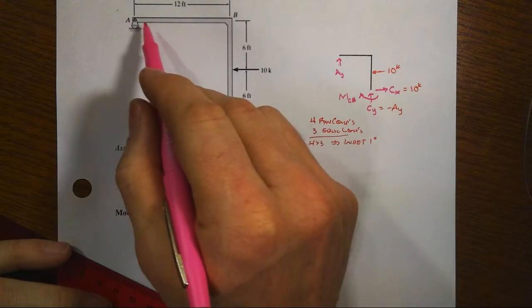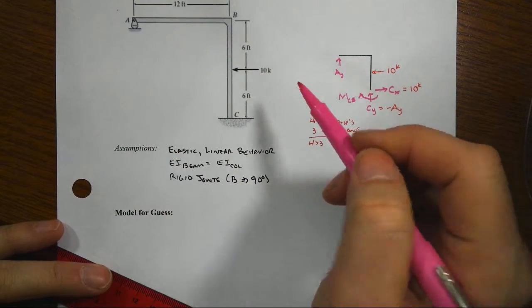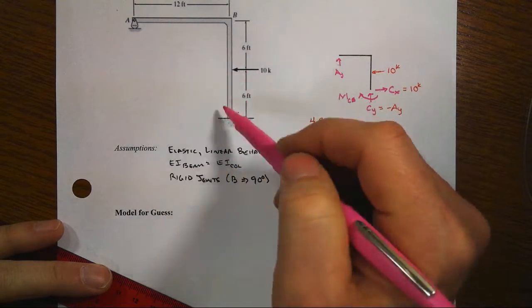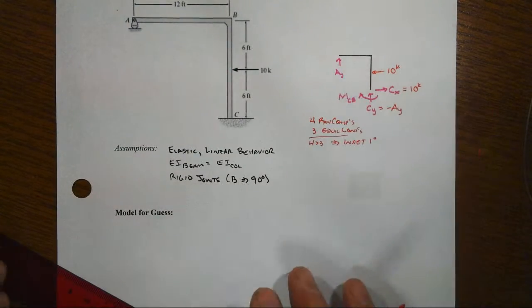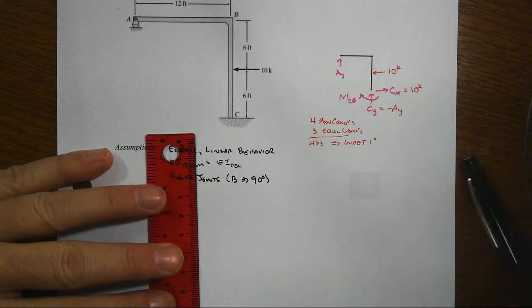And that this column wants to sort of bend to the left as well. So, hmm, how's that all going to work out? And what should I be doing here for our guess?